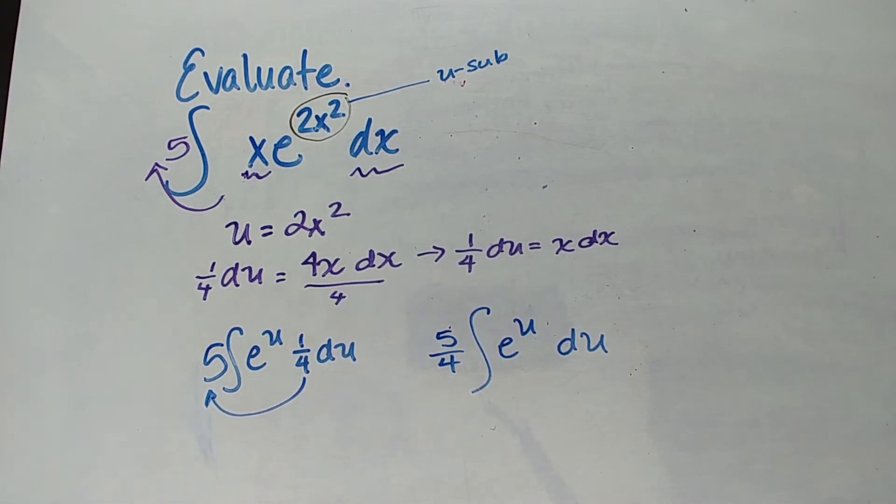e to the u. So this I know the integral of this. The integral of this is just e to the u plus c because e to the x, e to the u, e to the anything is its own integral. So let's integrate.